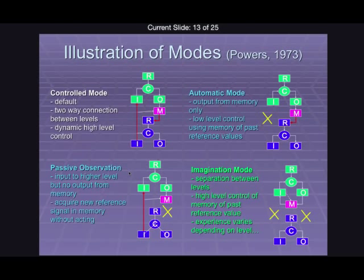Finally, we have the imagination mode, which I think is the most interesting. This is where both of these loops are switched off, which essentially creates separations between levels in the hierarchy. Now the low-level systems can carry on doing what they are doing, and the high-level systems don't need to be sending out commands for behaviour. They can be sending out reference values which are linked back into your own perception — so you're essentially perceiving things that you've generated yourself, and you'll be generating them largely from your own reference values. So if I ask you to imagine a rabbit or a cat, there'll be your classic reference for what a cat or rabbit looks like, and that'll come to mind.